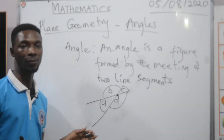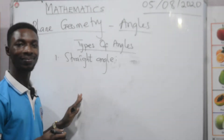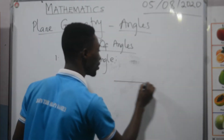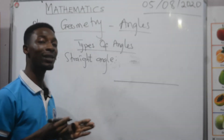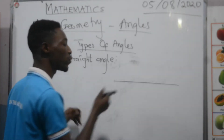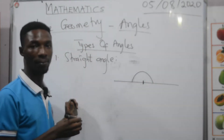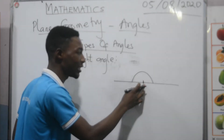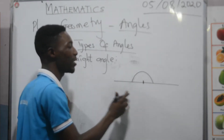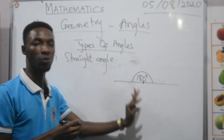We have different types of angles based on their sizes and how they are formed. The first is the straight angle. When we say an angle is straight, it means it is formed on a straight line. Two straight lines meeting at a point on a straight path form a straight angle, and a straight angle always measures 180 degrees.